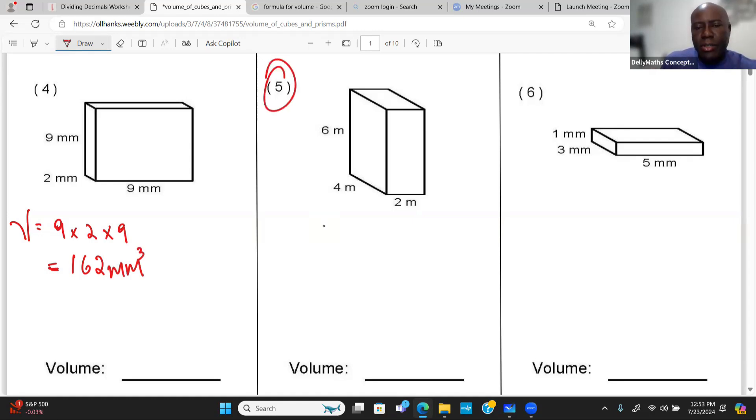For number 5, we need to define the length, the width, and the height, then the volume is going to be 2 times 4 times 6. And that is going to leave us with about 48 millimeter cube.